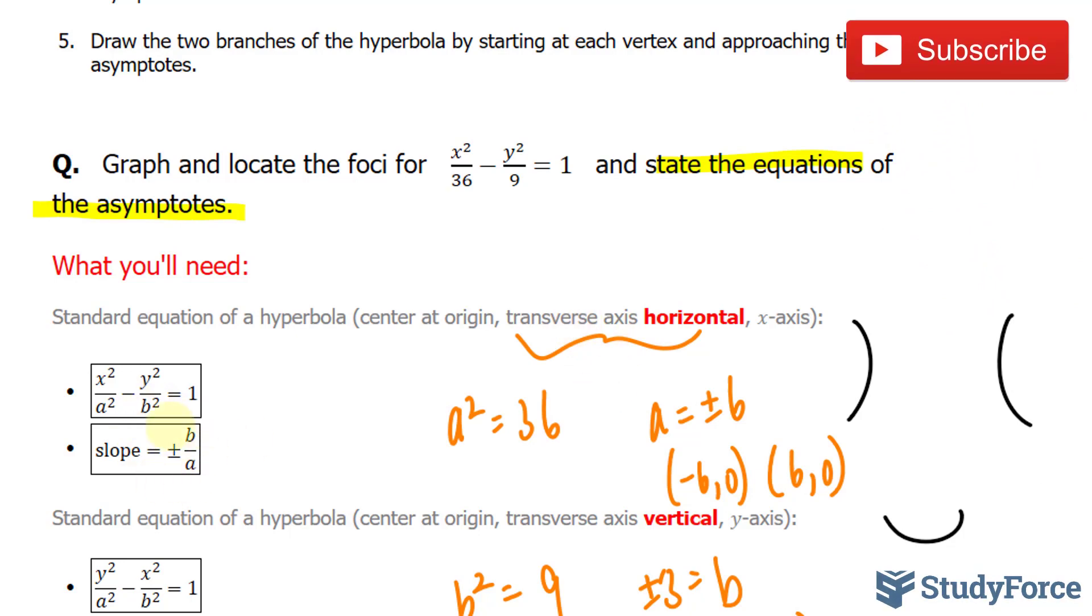Now because we determined that it's a transverse axis that's horizontal, we'll use this formula for the slope. So our b value is 3, or plus minus 3, divided by 6.